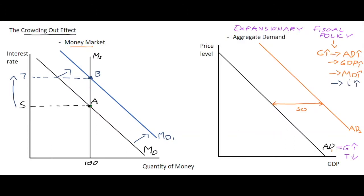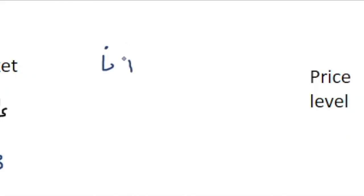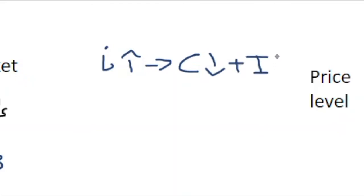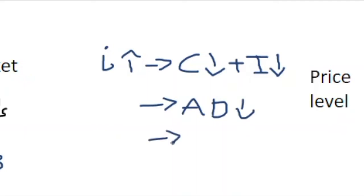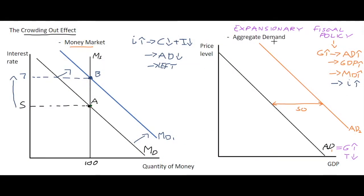With money demand increasing and the interest rate rising, it tends to crowd out the private sector. With the interest rate going up in the economy, it crowds out particularly two elements: household consumption and investment. Because these are both part of aggregate demand, they will tend to decrease aggregate demand and shift it leftwards.